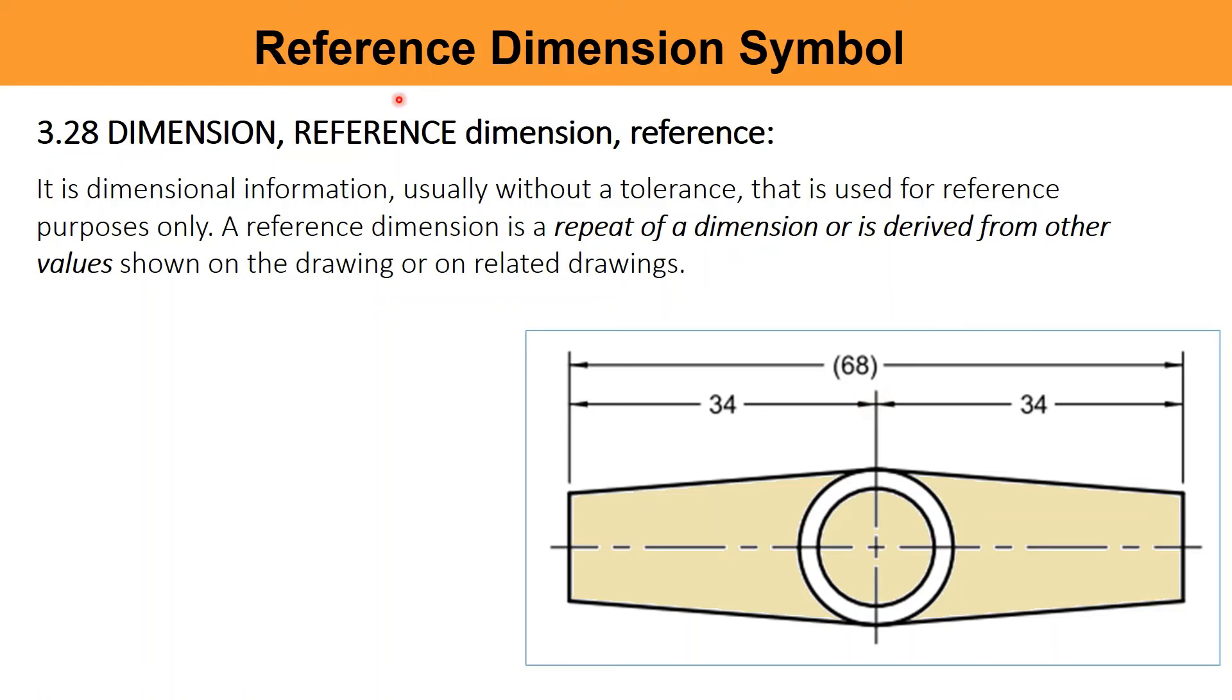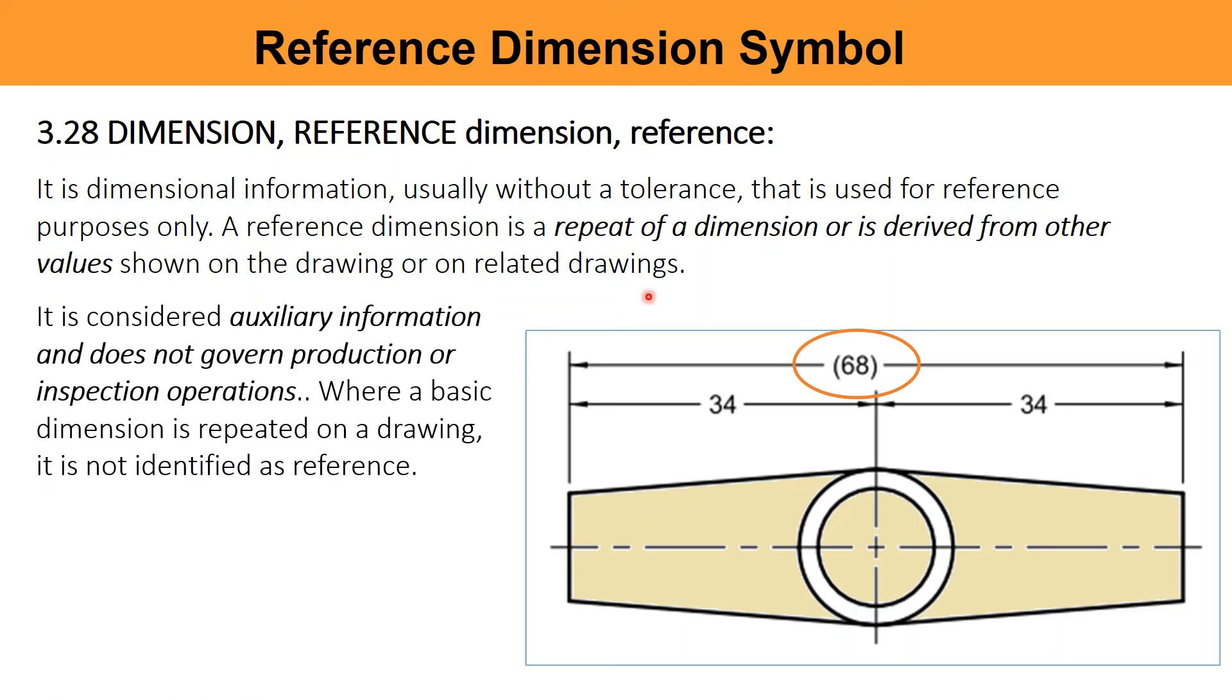Similarly, reference dimensions. It is dimensional information, usually without a tolerance, that is used for reference purpose only. A reference dimension is a repeat of a dimension or is derived from other values shown on the drawing or on related drawings. It is considered auxiliary information and does not govern production or inspection operations. It means, these values should not be used for the production or the inspection purpose.